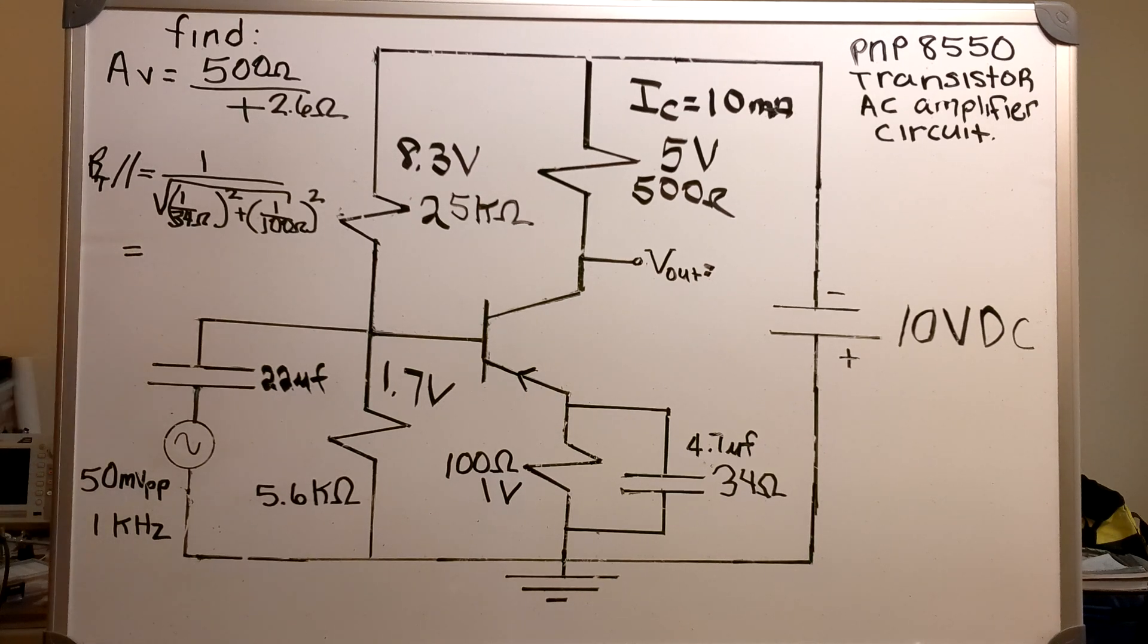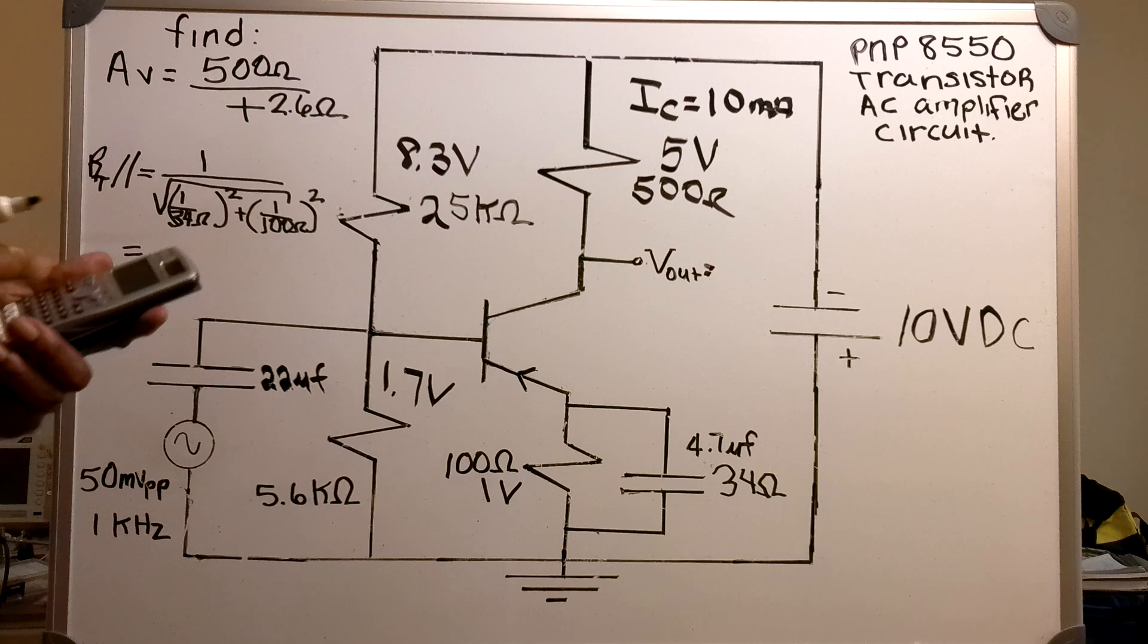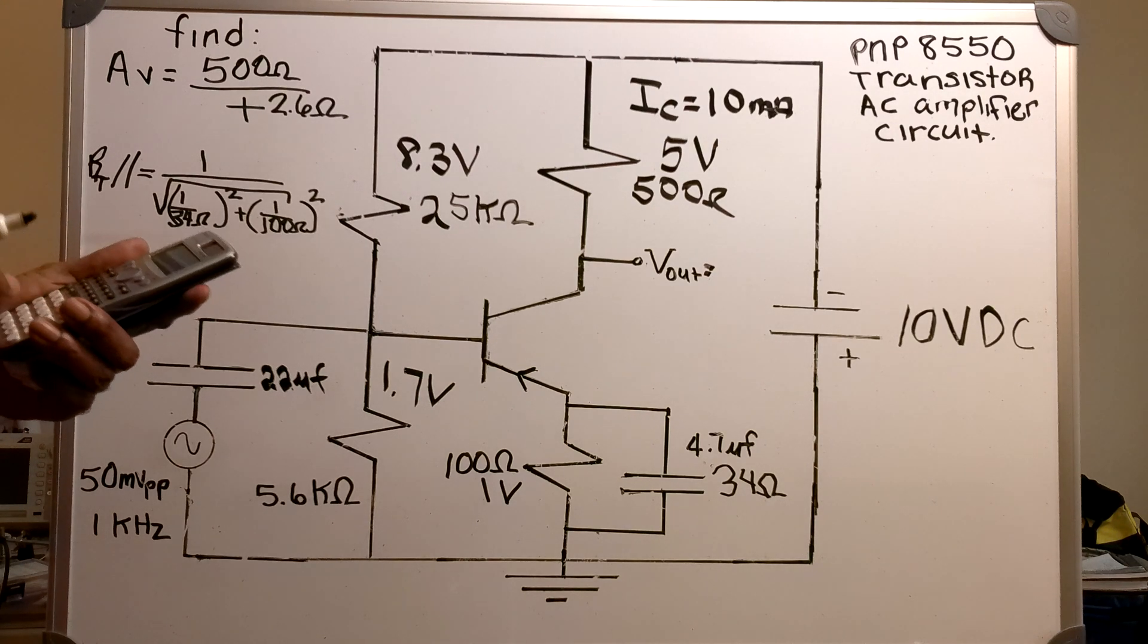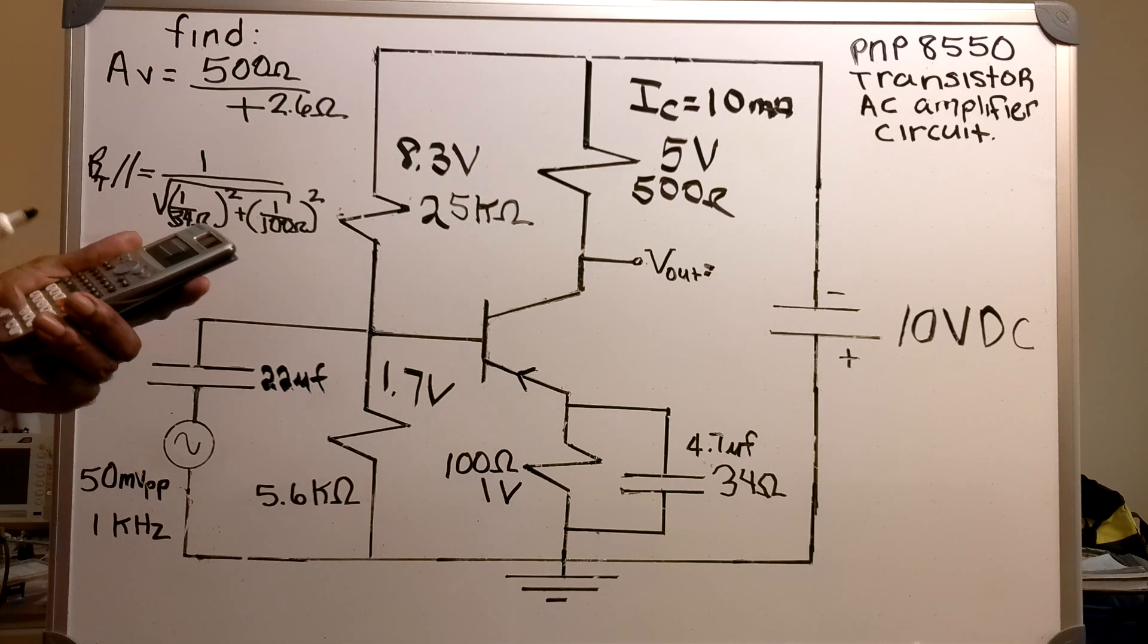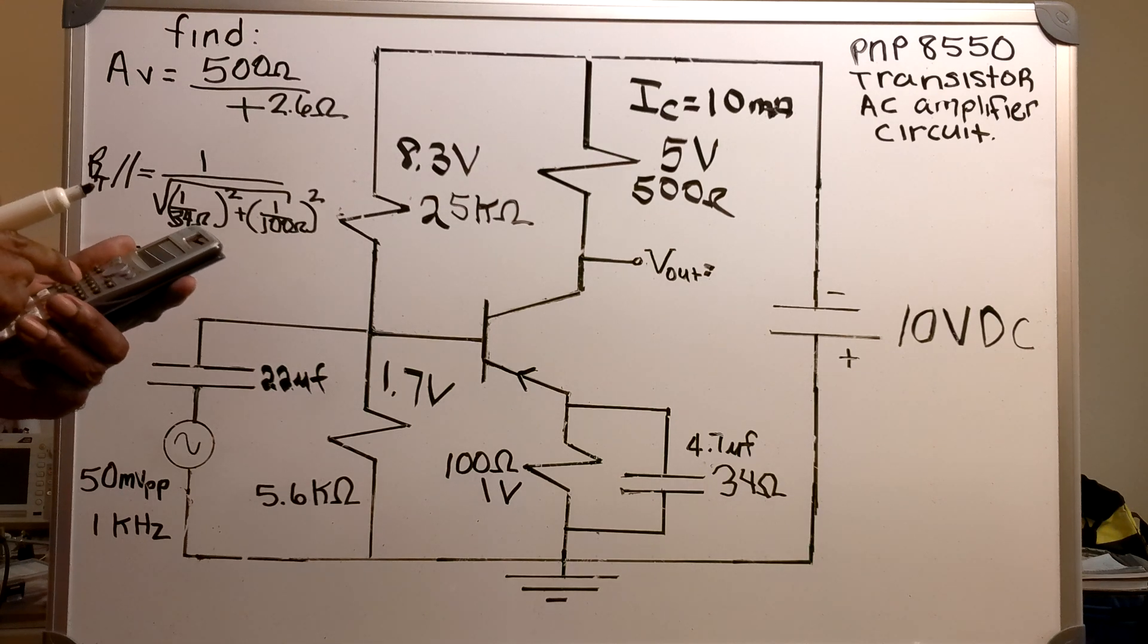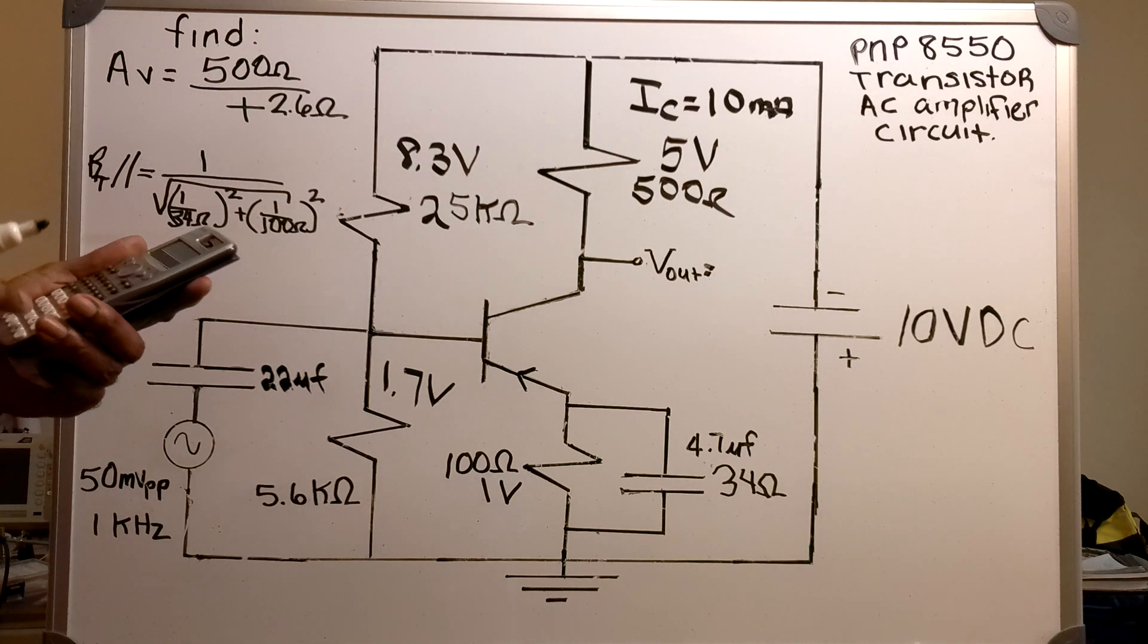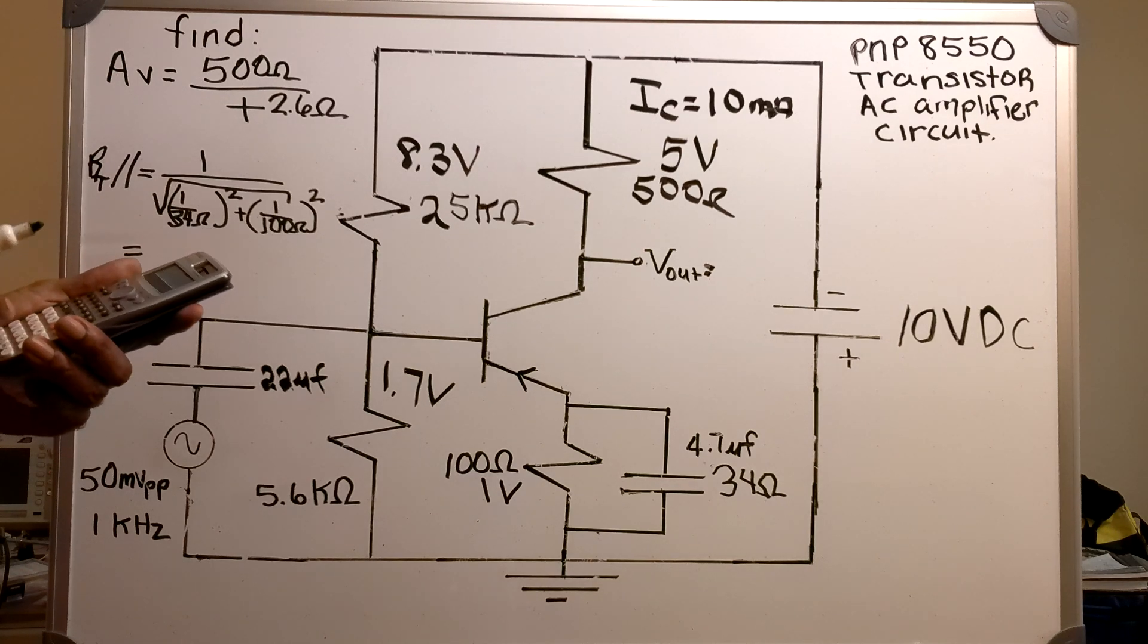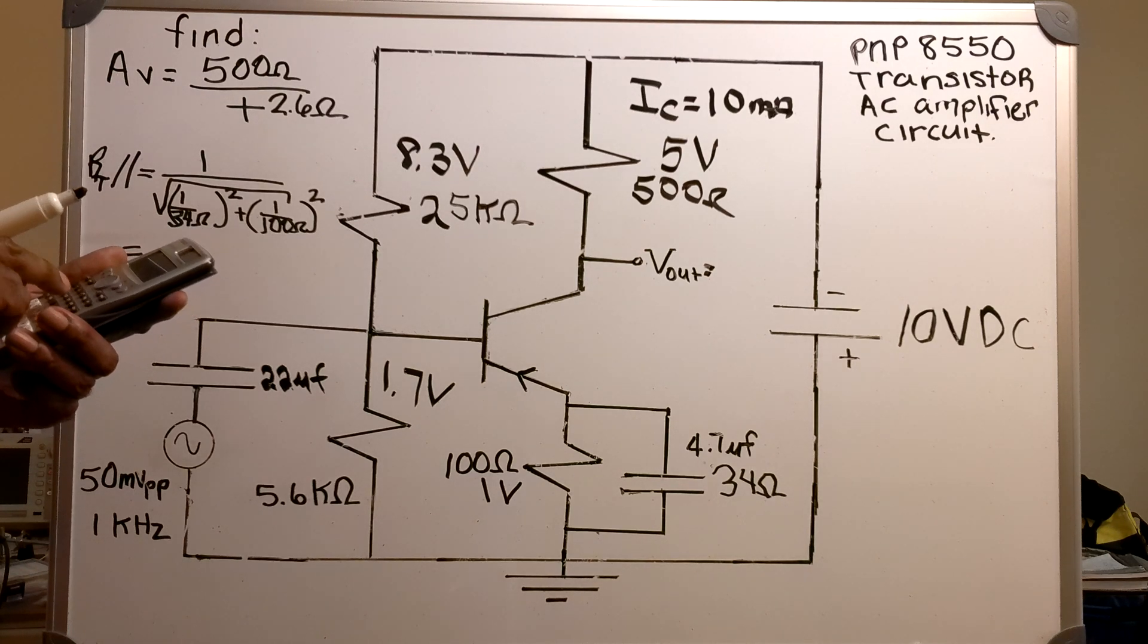That equals 1 over square root of 1 divided by 34 squared plus 1 divided by 100 squared.